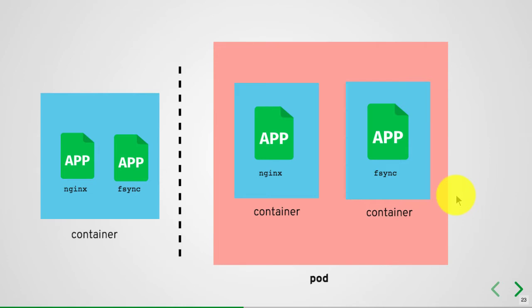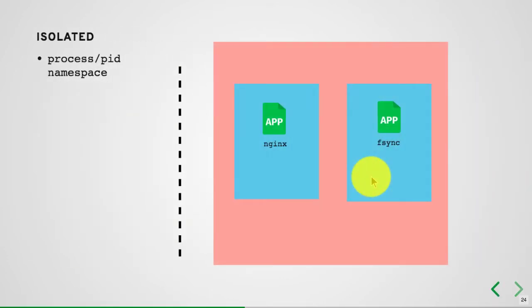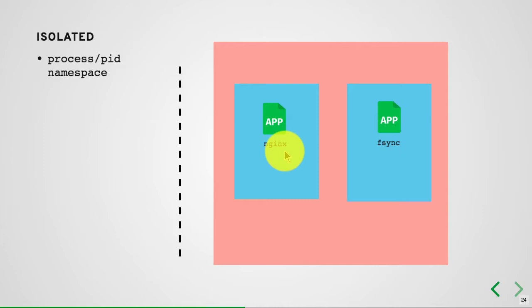The unit of deployment in Kubernetes is not a container but a pod. A pod allows you to co-locate and run containers together. Instead of running two applications in one container, you run each in its own container, and those containers will share certain namespaces. When you create a container, there are up to five namespaces: its own file system, its own network, its own hostname, its own user namespace, and the PID namespace for process isolation.